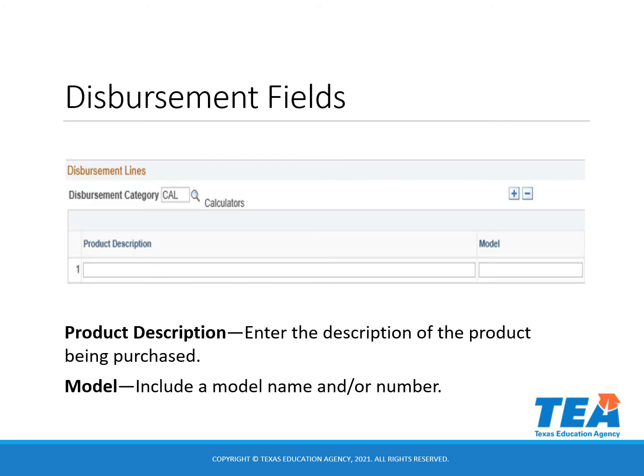After choosing your category, you will enter the pertinent information for your item. In the product description field, you will describe the item. For example, if you chose calculators as your category, in the description field you can enter Texas Instruments graphing calculator. In the model field, you will enter the model type — for example, TI-84 Plus would be the model.